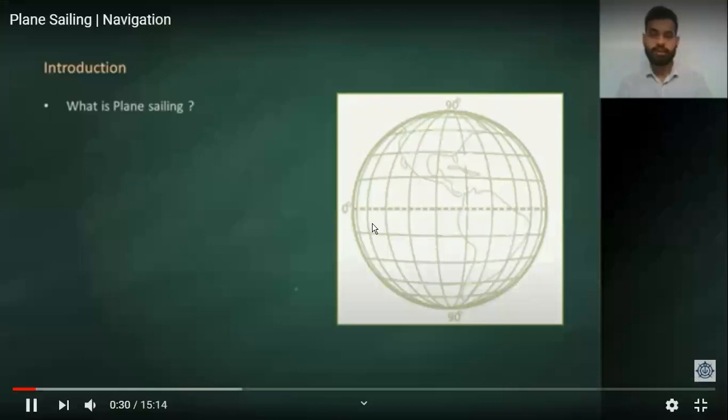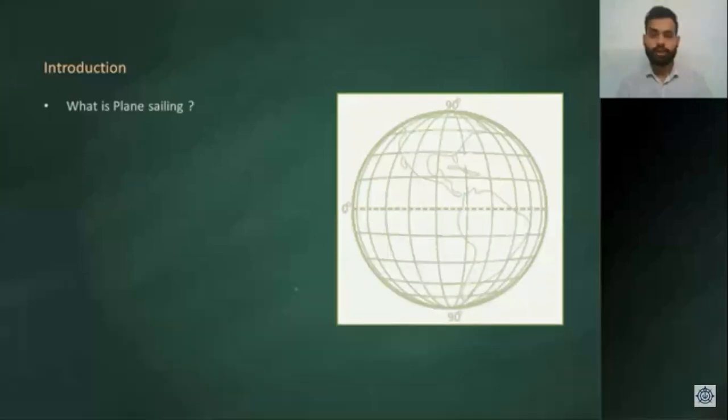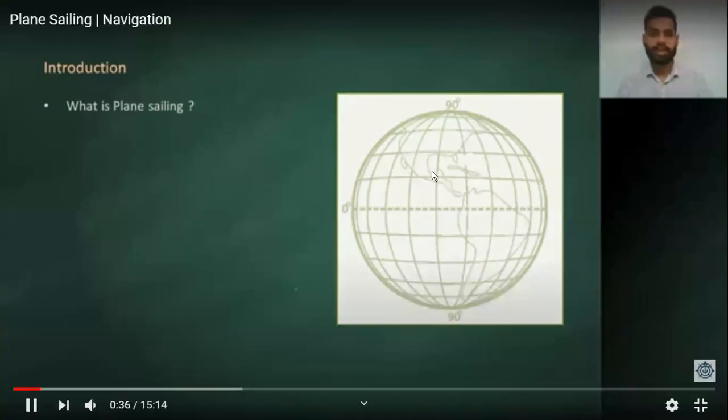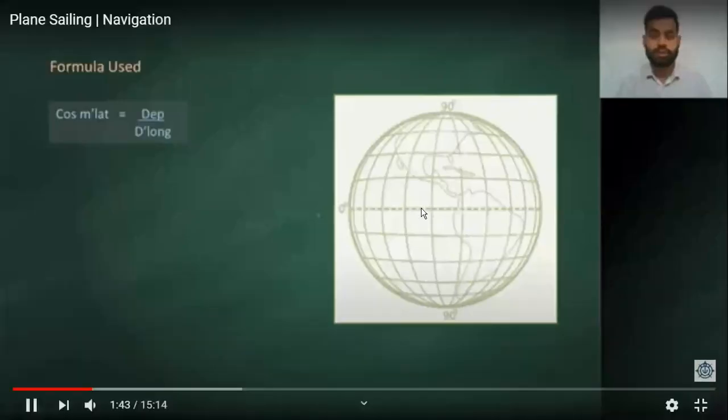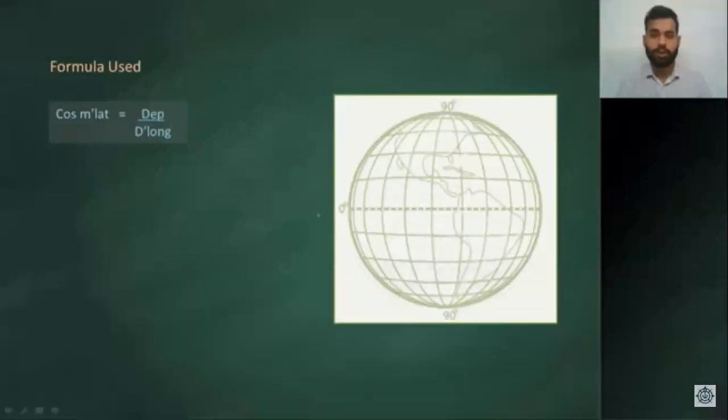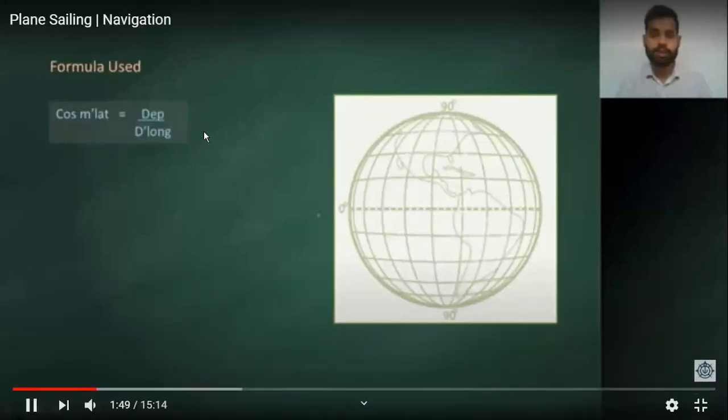Plane sailing is from point A to B where you have different latitudes and we assume flat surface because it's for a really small distance on the earth, up to maximum 600 miles. If more than 600 miles, I use Mercator and great circle sailing. The formula is: cos mean lat equals departure upon d long.